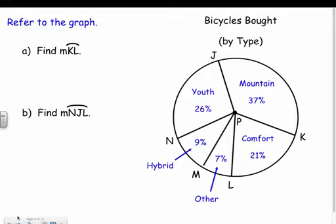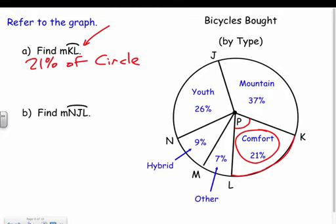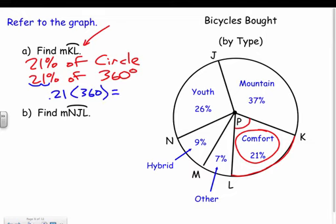Let's find the measure of arc KL — remember this is the arc angle. That piece of the pie is really 21 percent of the circle, so I find 21 percent of 360 degrees. Change to a decimal: 0.21 times 360 gives us 75.6 degrees. It's just 21 percent of the circle, which is 360 degrees total.